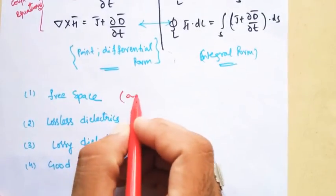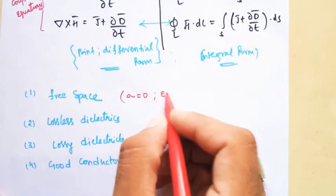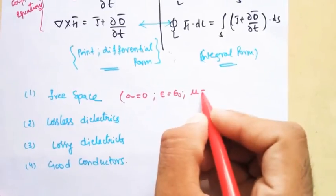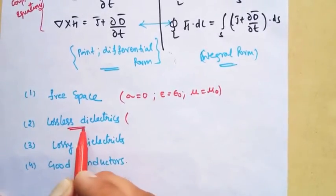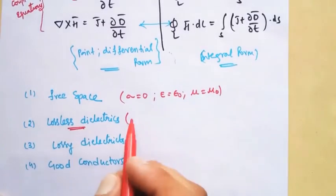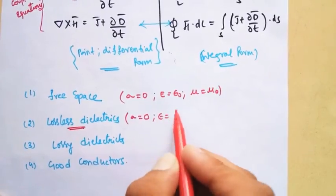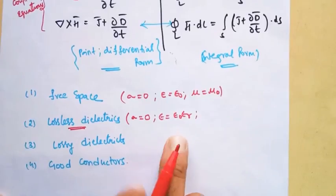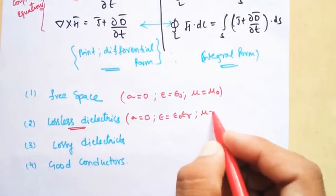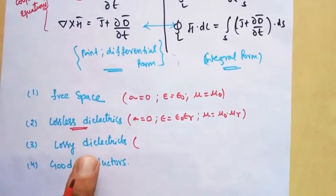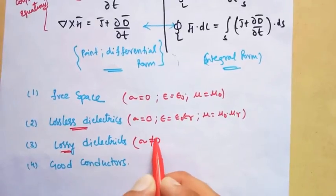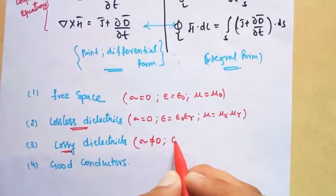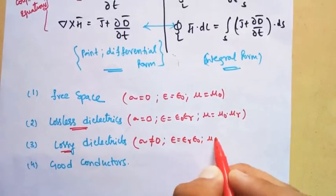For free space, the conductivity of the medium is zero, permittivity epsilon equals epsilon-naught, and permeability mu equals mu-naught. For lossless dielectrics — also called perfect or good dielectrics — conductivity is zero, permittivity is epsilon-naught times epsilon-r, and permeability is mu-naught times mu-r. For lossy dielectrics, they are similar to lossless dielectrics but have small losses, so conductivity is not equal to zero, while epsilon equals epsilon-r times epsilon-naught and mu equals mu-r times mu-naught.